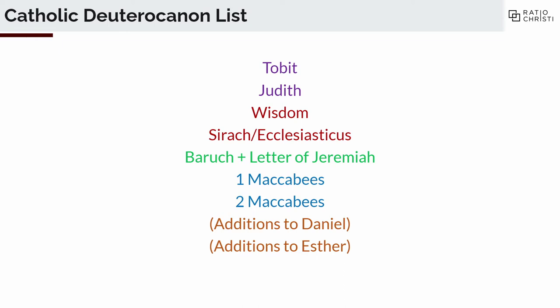Then Baruch and the Letter of Jeremiah belong in the Prophets — they belong with Jeremiah. Think about the Book of Jeremiah; that's the genre of these books. And 1st and 2nd Maccabees are history — like 1st and 2nd Kings, 1st and 2nd Chronicles. Then you have the additions to Daniel and the additions to Esther. Esther is more of a tale, and Daniel is several things — but the additions don't differ from Daniel and Esther themselves, really.